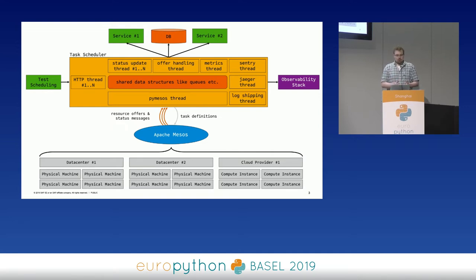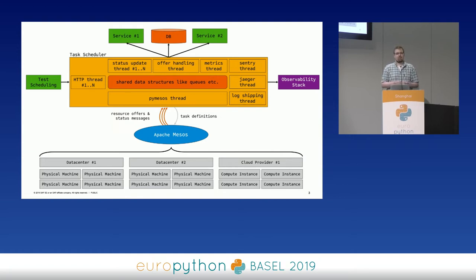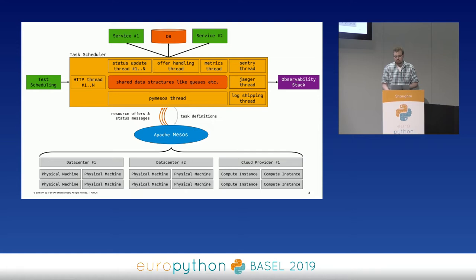We now have the problem that performance is no longer optimal — resource utilization goes down. The nice thing about our observability stack is that we can inspect each thread and each part of the system to find out where the bottleneck is. We applied the same method to find out why we cannot utilize all the available resources.